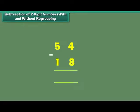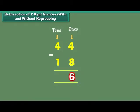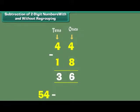What is 54 minus 18? 54 has 5 tens and 4 ones. We want to remove 8 ones. We regroup 1 ten as 10 ones. Now we have 14 ones and 4 tens. We remove 8 ones from 14 ones. We are left with 6 ones. We remove 1 ten from 4 tens. We are left with 3 tens. Therefore, 54 minus 18 is equal to 36.